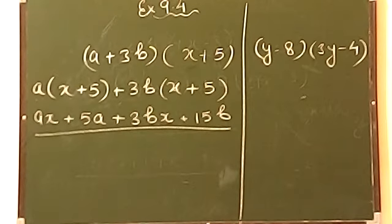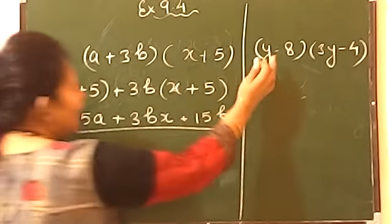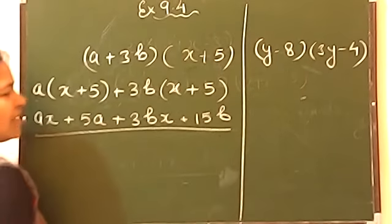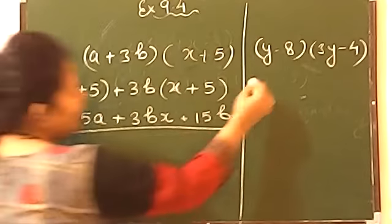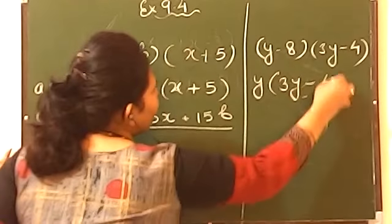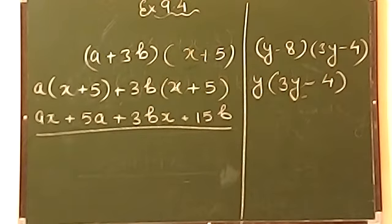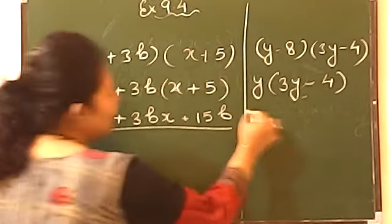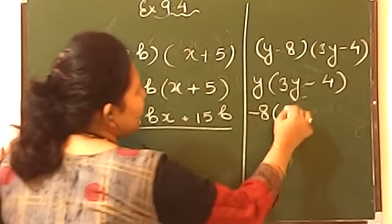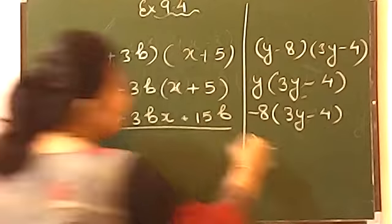Now next term is minus 8. So we will have minus 8, again multiply with 3y minus 4. Now let's open the bracket.